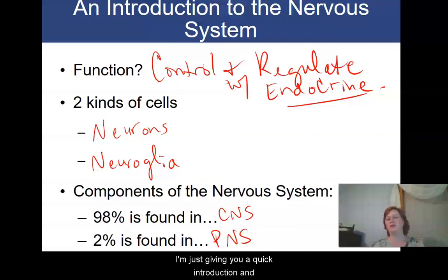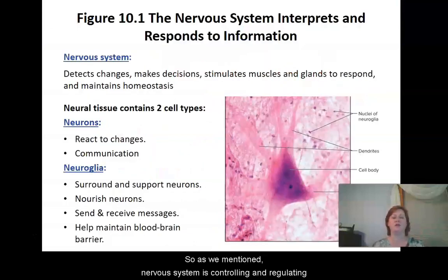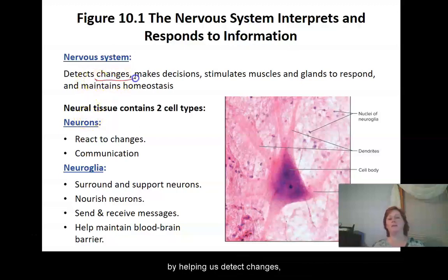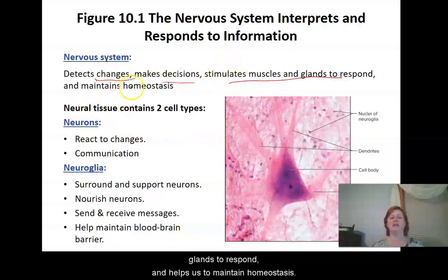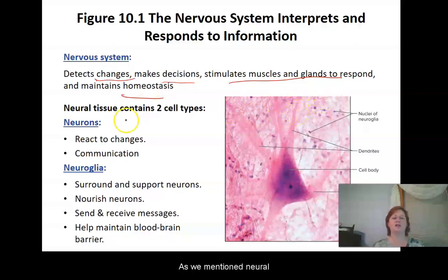Now I'm just giving you a quick introduction and hope that you watch the Crash Course videos because they get into a little bit more detail in the different types of glial cells. So as we mentioned, the nervous system is controlling and regulating by helping us to detect changes, makes decisions, stimulates muscles and glands to respond, and helps us to maintain homeostasis. Neural tissue has two kinds of cells: neurons which conduct the electricity and neural glia which help to take care of them.